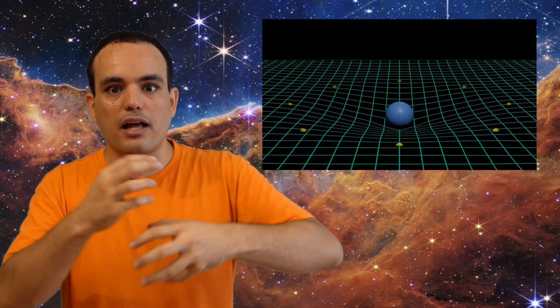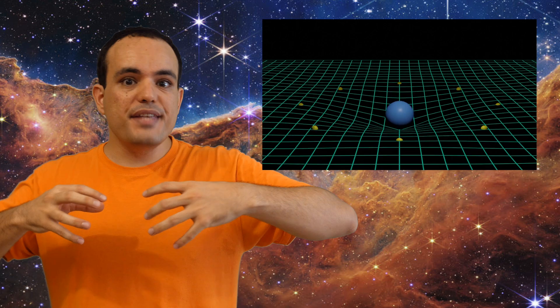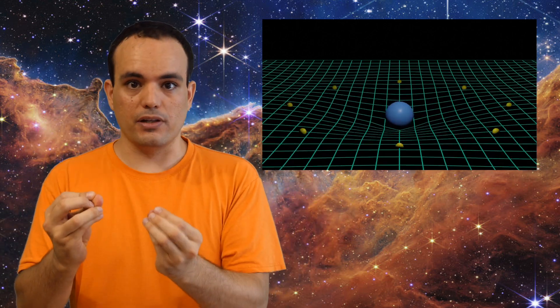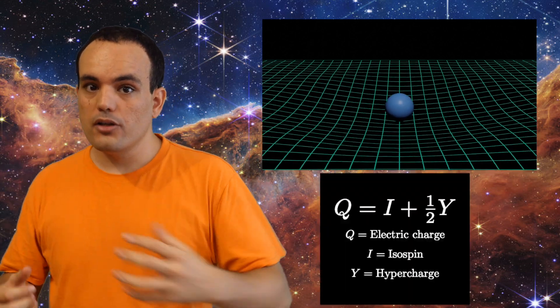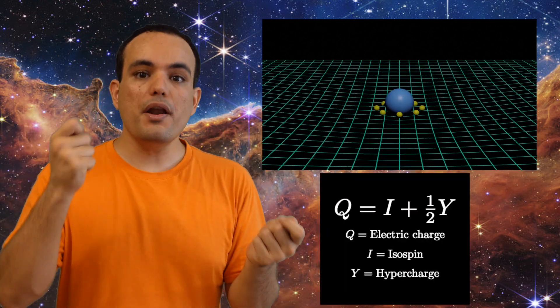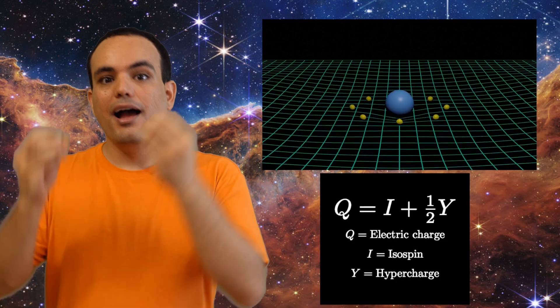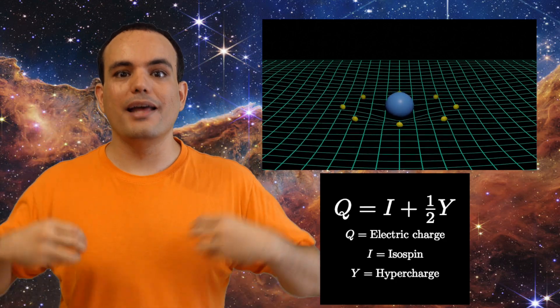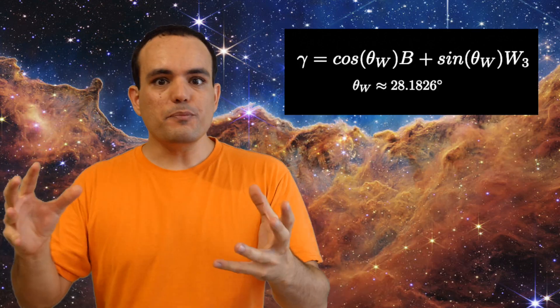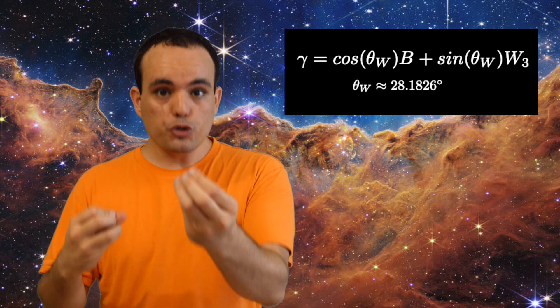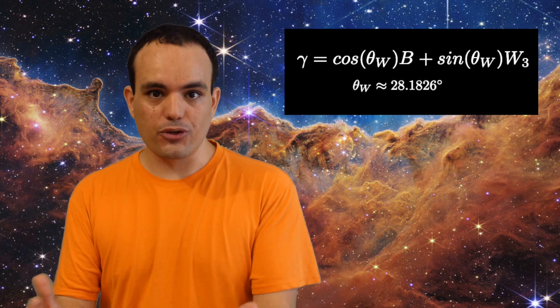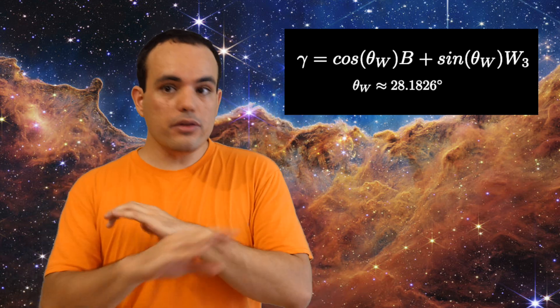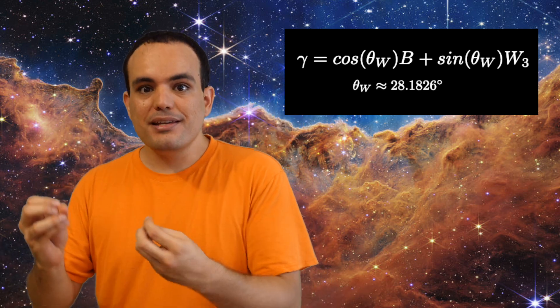Also, the combination of the hypercharge field and the isospin field gives the appearance of a single field created by a single quantity, which is equal to the isospin plus one half of the hypercharge. And this is what we call electric charge. This process also combined the neutral bosons B and W3, creating the photon, a neutral particle with no mass, only spin and energy.